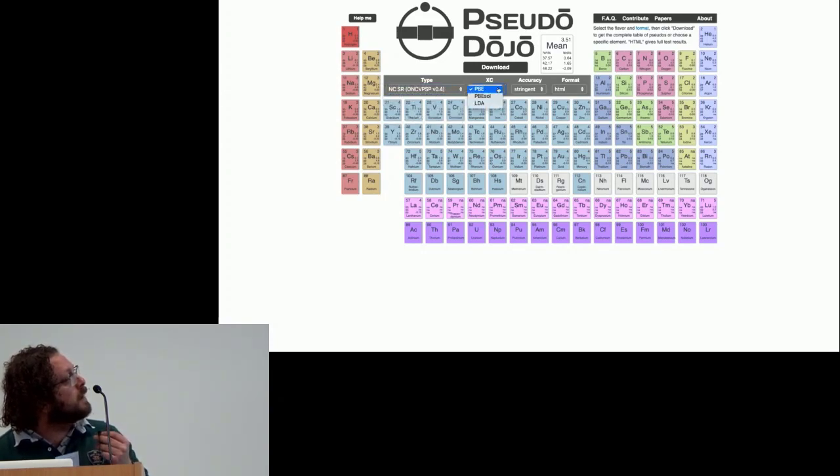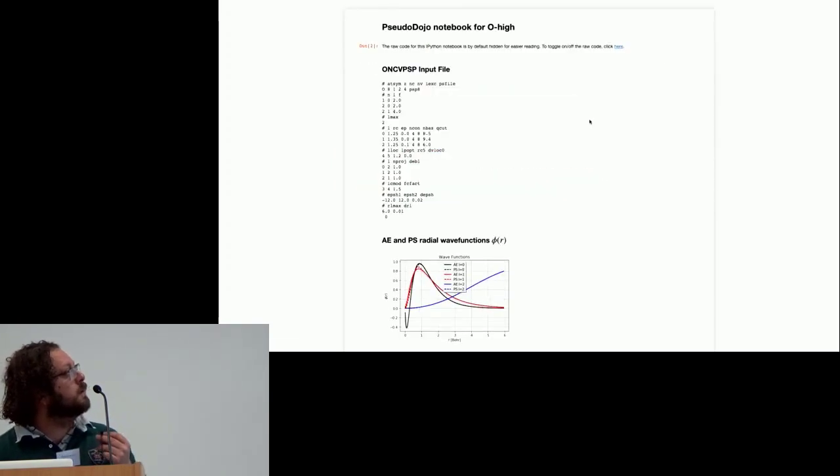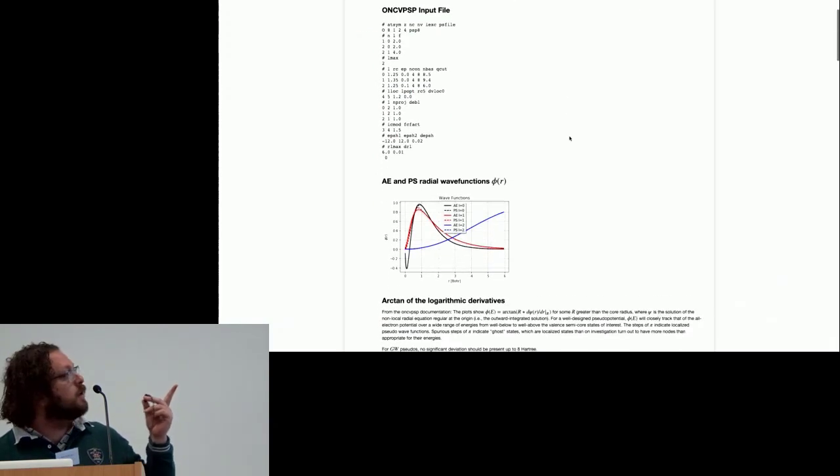In this box we can select the functional. At present we have PBE, PBEsol, and LDA. Here the accuracy of the table, standard and stringent, and the different file formats. If we select HTML and we click on the element then we access the Jupyter notebook with the input file of the calculation,